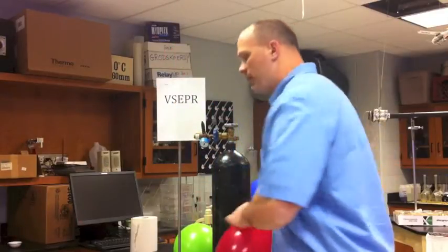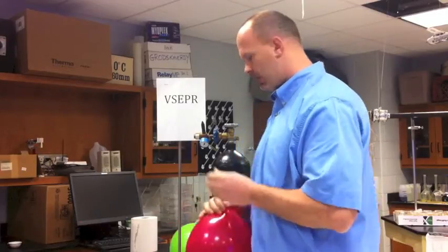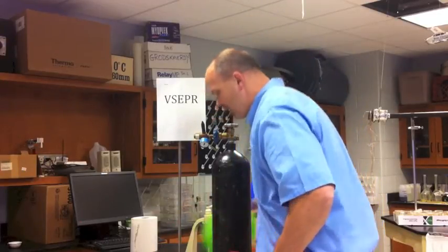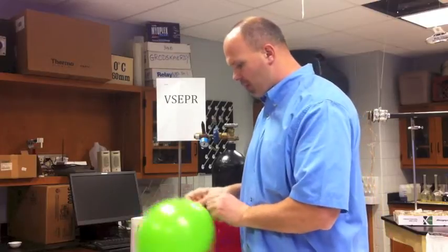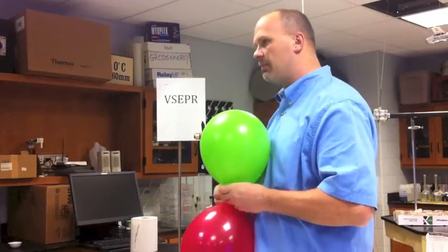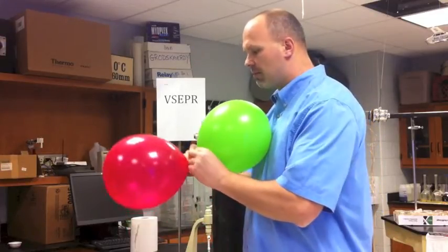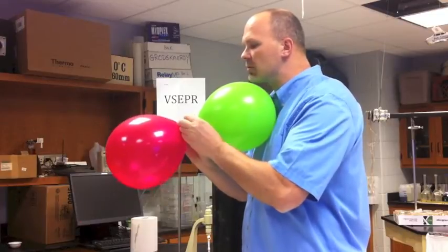This is nitrogen gas, by the way. And I'll do my best to make these nice little bonds here. So the central atom is where my thumb or my fingers are, and I'm just going to tie these together. And clearly, I'm going to make, hopefully, a linear shape if I can tie these. Big fingers, small balloons.